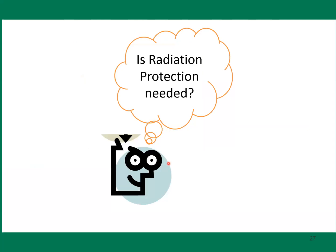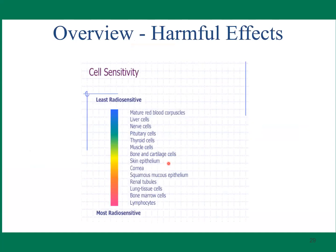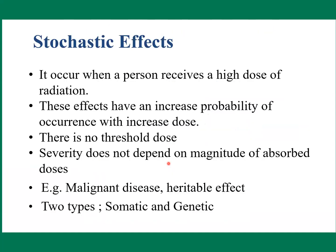Is radiation protection needed? Yes. Radiation hazards include some harmful effects. Stochastic effects can occur and have an increased probability with increased dose — there is no threshold dose. Examples include malignant disease and genetic effects, with two types: somatic and genetic. Deterministic effects depend on time of exposure, dose, and type of radiation; they have a threshold below which the effect does not occur.